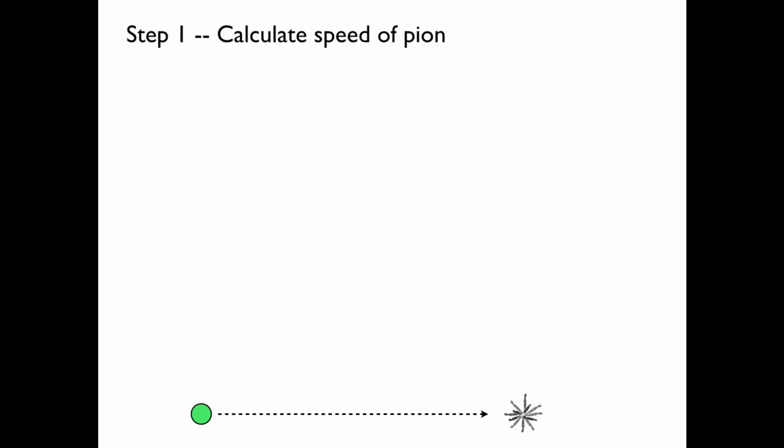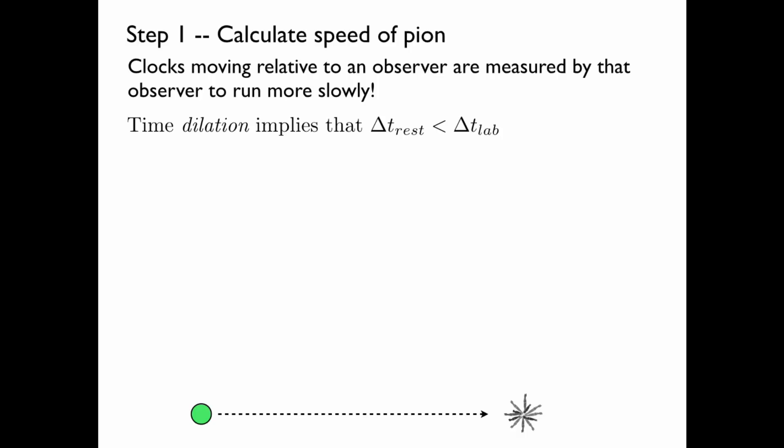First, we'll calculate the speed of the pion. Now, clocks moving relative to an observer are measured by that observer to run more slowly. The time dilation implies that the decay time in the rest frame is less than the decay time measured in the lab frame.